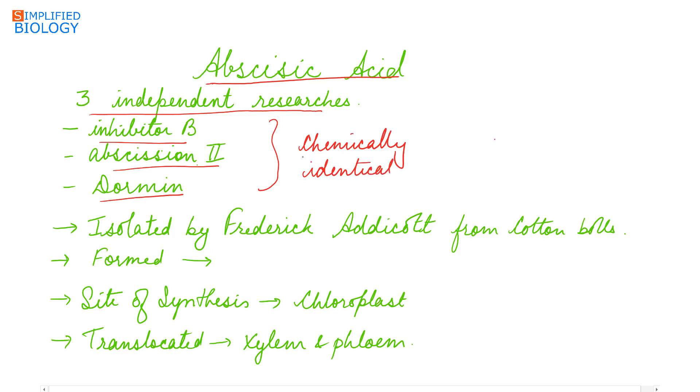It was isolated by Frederick Adicott from cotton bolls. Abscisic acid is formed by oxidation of carotenoids and it is synthesized in all parts of the plant but mainly in the chloroplast, and is translocated by diffusion through the xylem and phloem.